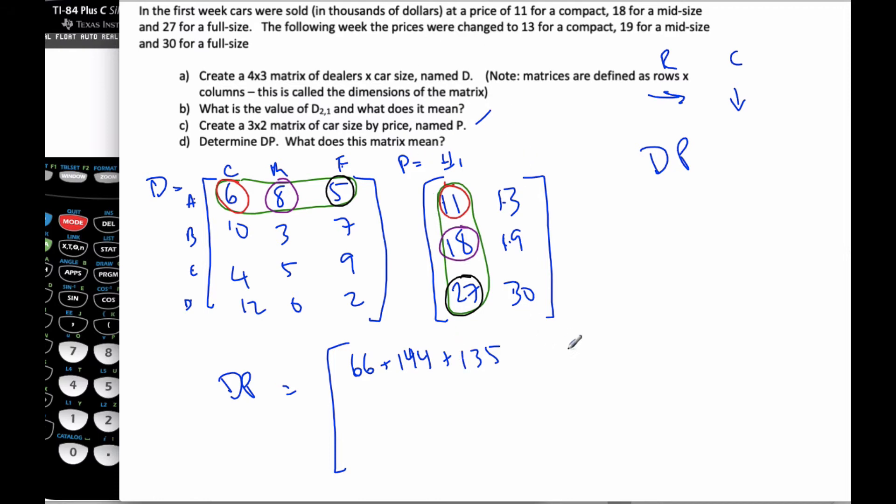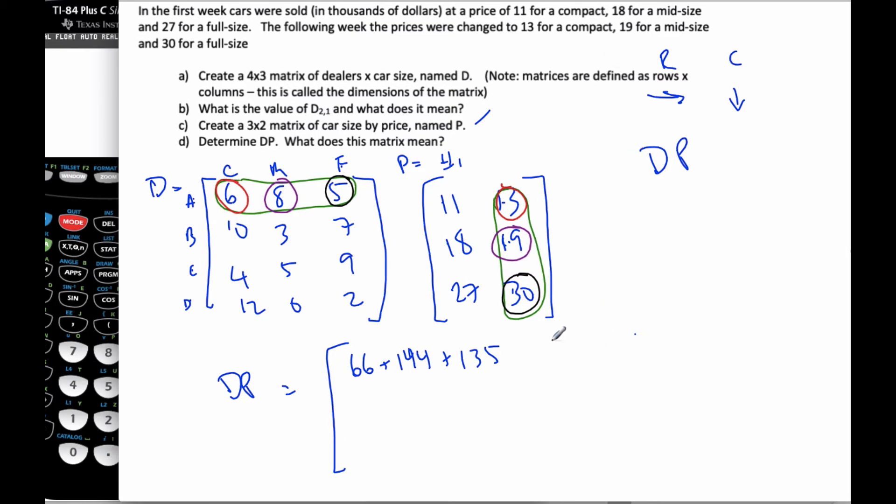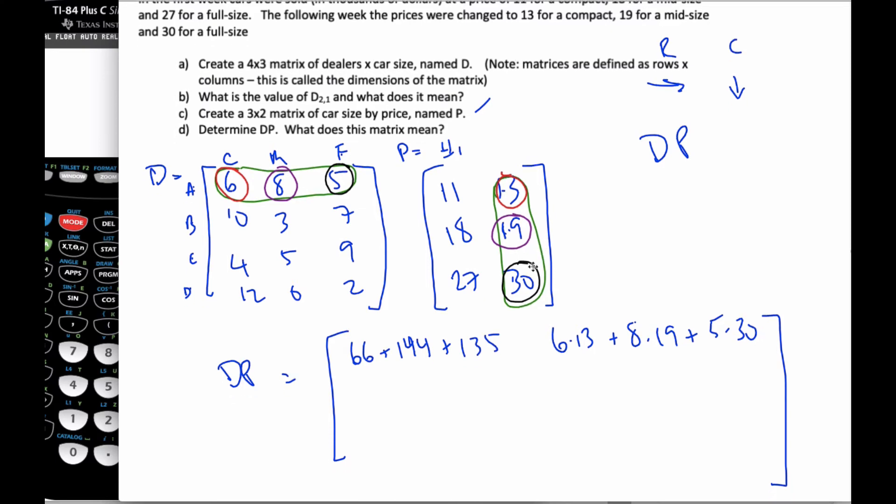Then I move on to this position here. So now I'm going to move the green circle over, the red over, and the purple and the black over. And so now it's 6 times 13, plus 8 times 19, plus 5 times 30. And that's going to go in this position here. When these numbers are big, it's pretty messy to work with, but we have no choice.